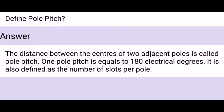Define pole pitch. The distance between the centers of two adjacent poles is called pole pitch. One pole pitch is equal to 180 electrical degrees. It is also defined as the number of slots per pole.